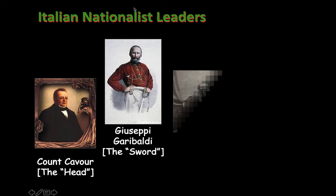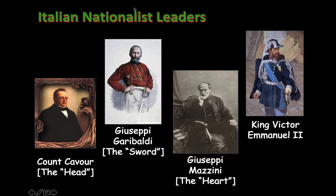Here are the leaders: Cavour, Garibaldi, and Giuseppe Mazzini — they're the action figures, the people doing things. King Victor Emmanuel will become king of a unified Italian state; he was king of Sardinia Piedmont and then becomes king of all Italy. Mazzini is the heart of Italian unification — he inspires people. His attempted revolution is not successful, but he plants the seeds of nationalism. Cavour's plan includes kicking Austria out of the Italian states. Garibaldi provides the passion and muscle, unifying the southern and northern Italian states.